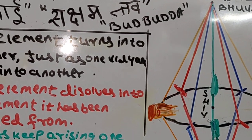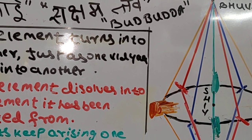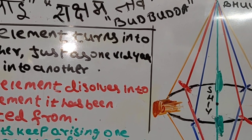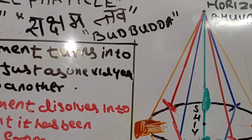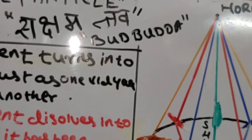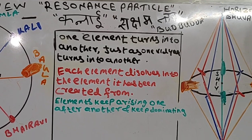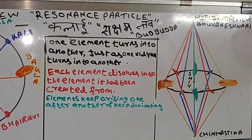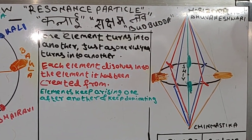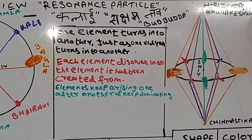There was another expert named Ashtavakra. He called it Budbuda. Budbuda means it has the nature of bubbles — it has the nature of bubbles.